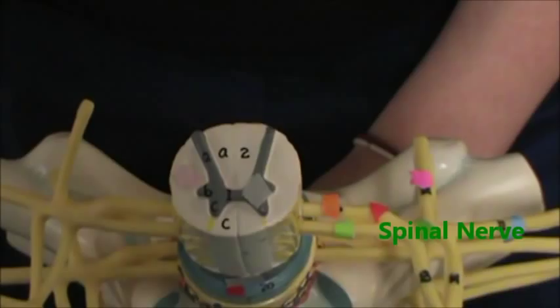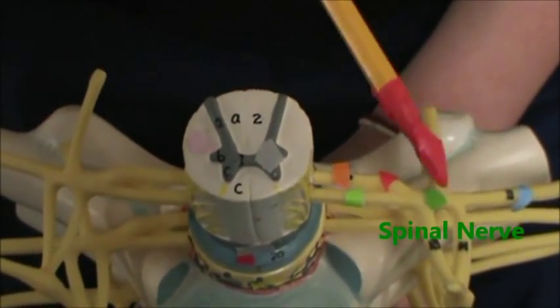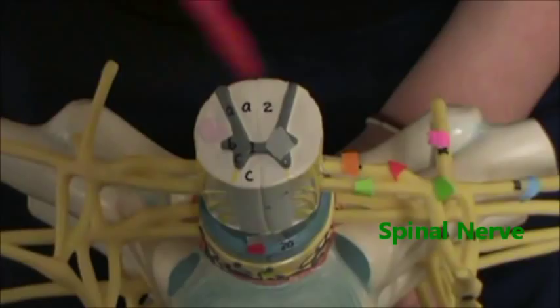And in green we have where the dorsal and ventral root form a spinal nerve. So green is your spinal nerves.